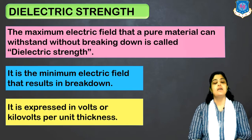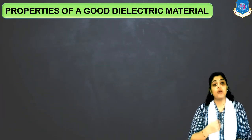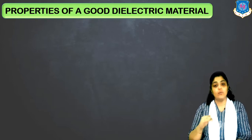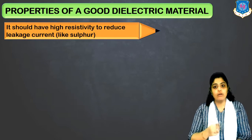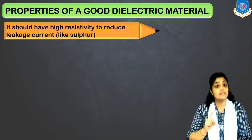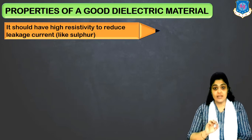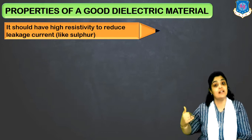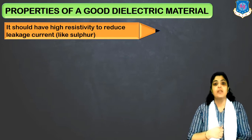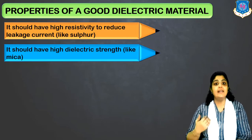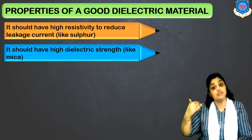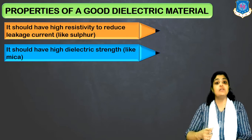Now let's discuss all the properties a good dielectric material requires, one by one. First, a good dielectric material should have high resistivity to reduce leakage current, because low resistance causes high leakage current and the dielectric breaks down easily — for example, sulfur, which has very high resistivity. It should also have a very high dielectric strength — for example, mica, which doesn't break down easily and can operate up to temperatures of 180°C.